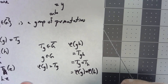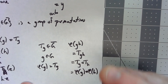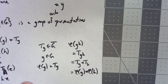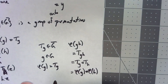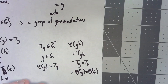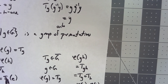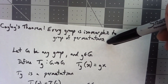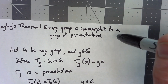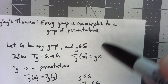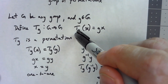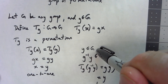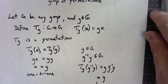So there we go — from every single group we constructed a set of permutations and shown a natural isomorphism between them. Honestly, it isn't so much the theorem itself that's important as this construction. The fact that we can take a group element and make a permutation out of it is a very important idea that comes up on a fairly regular basis.